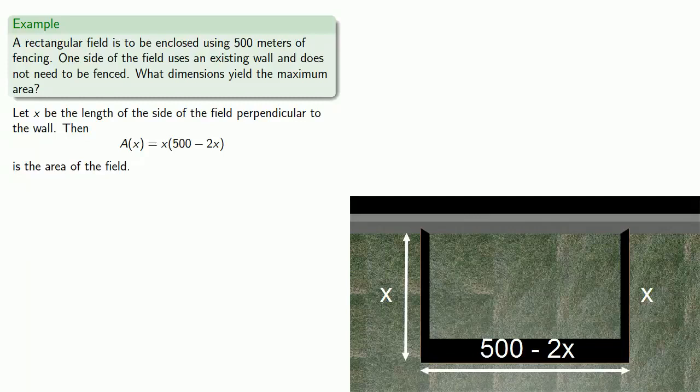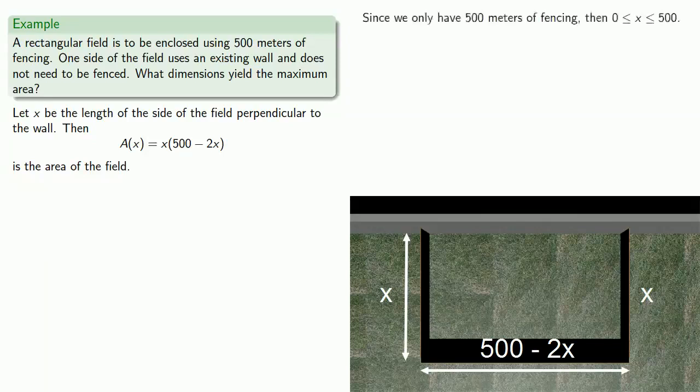Because it's possible that our extreme values might occur at the endpoints, it's extremely useful to have some idea of where the function is relevant. And since we only have 500 meters of fencing, we can't make any side of the field longer than 500 meters. And so that tells us that x has to be between 0 and 500. Actually, if we think about it, we can find an even stricter bound on x. But we don't need it for this problem.